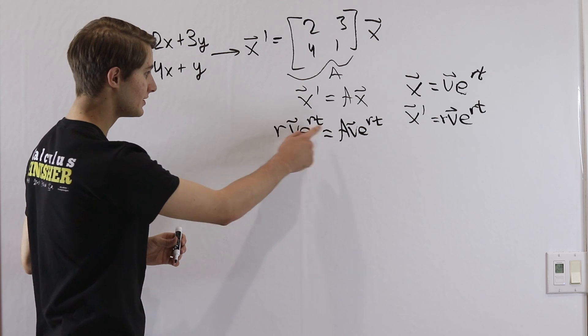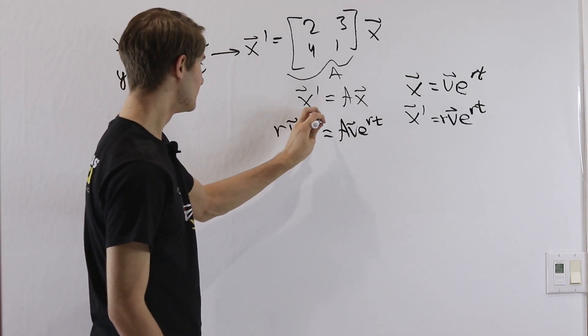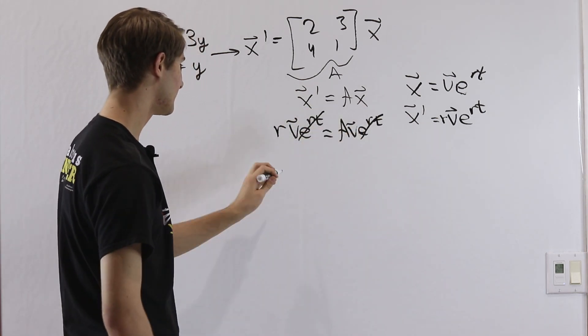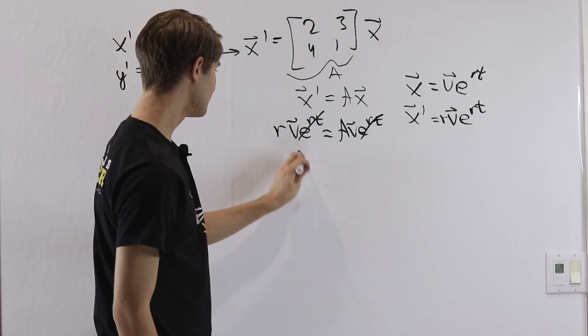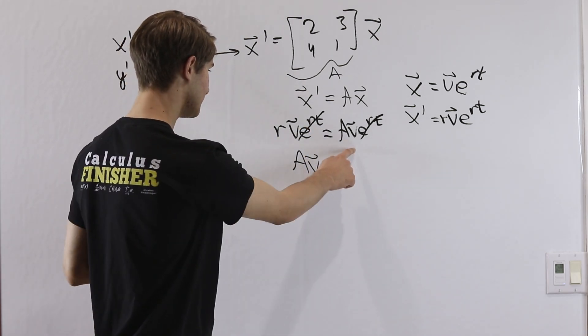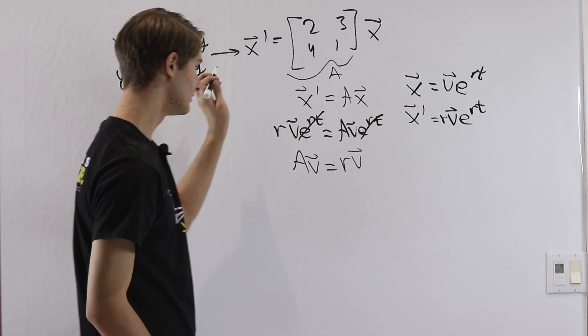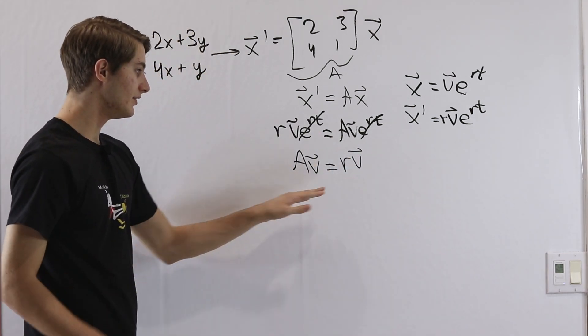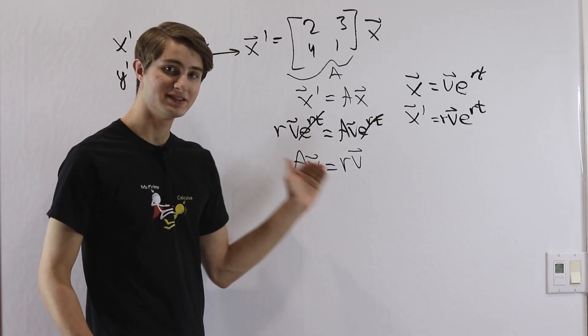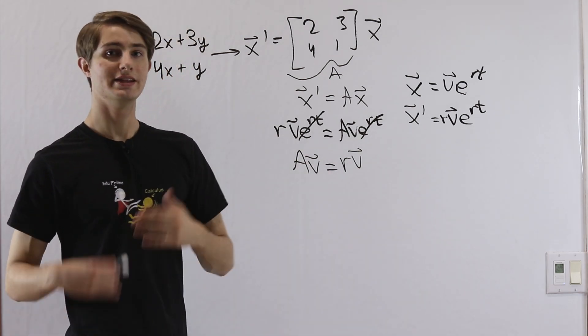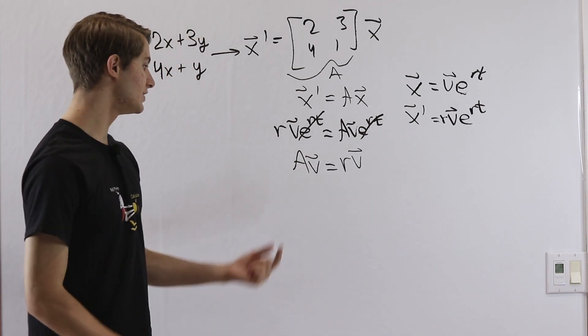And again, the cool thing about this, we have e to the rt, e to the rt, so those are going to nicely cancel out. And I'm just going to flip the sides of the equation here. That will leave us with a v, this here, equals r times v. And this is another equation that we'll recognize because this is the exact equation for defining the eigenvalues of a matrix A.